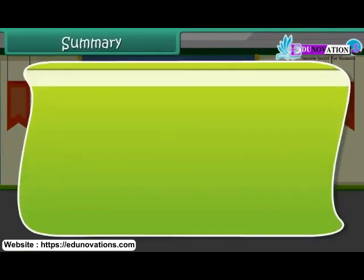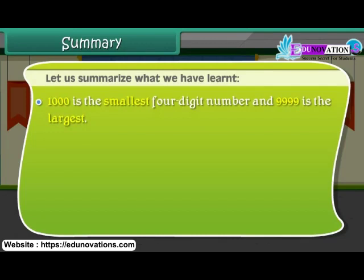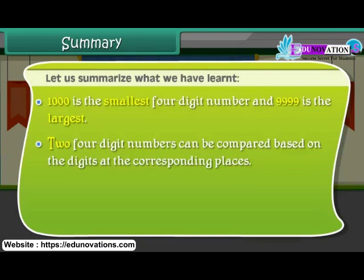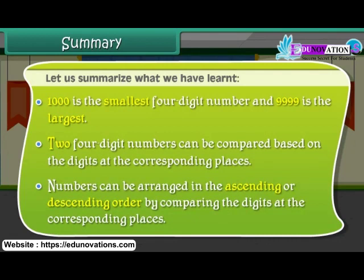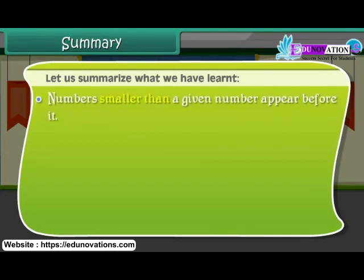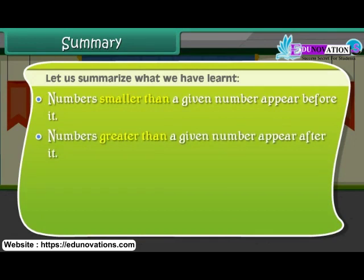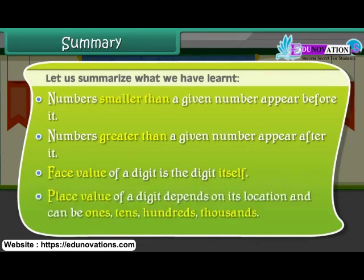Summary: let us summarize what we have learned. 1,000 is the smallest four-digit number and 9,999 is the largest. Two four-digit numbers can be compared based on the digits at the corresponding places. Numbers can be arranged in ascending or descending order by comparing the digits at the corresponding places. Numbers smaller than a given number appear before it. Numbers greater than a given number appear after it. Face value of a digit is the digit itself. Place value of a digit depends on its location and can be ones, tens, hundreds, and thousands.